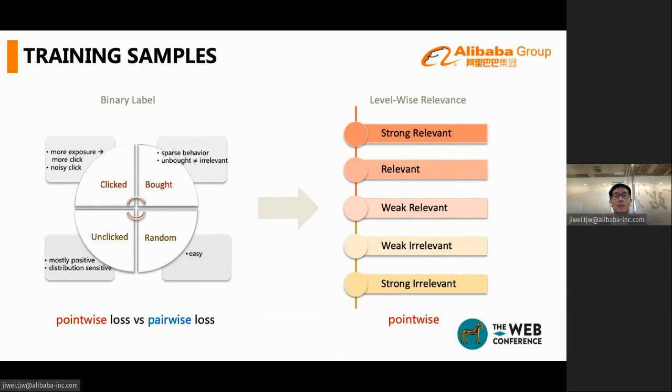Previous work found the pairwise loss performs better than pointwise, because pairwise training learns the comparison of one product is better than another one, instead of absolute, relevant, or not from the noisy fake labels. But in our practice, we found the pairwise training is sensitive to the data distribution, not stable even when training is only different random initializations.